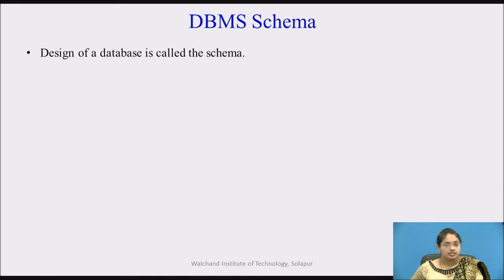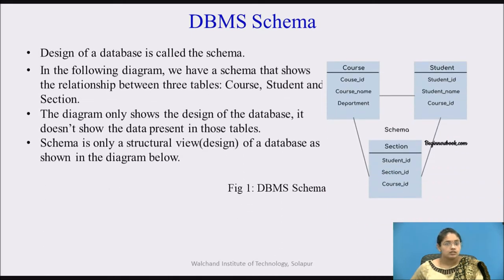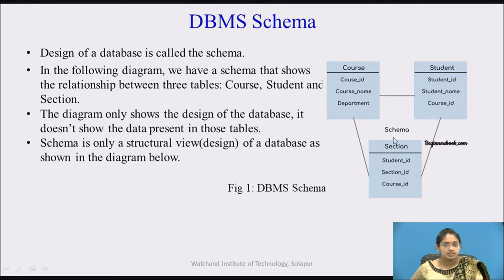The design of a database is called a schema. In the following diagram, we have a schema that shows the relation between three tables: course, student, and session. The diagram only shows the design of the database; it doesn't show the data present in these tables. The schema is only a structural view of the design of the database, as shown in the figure showing the database schema.